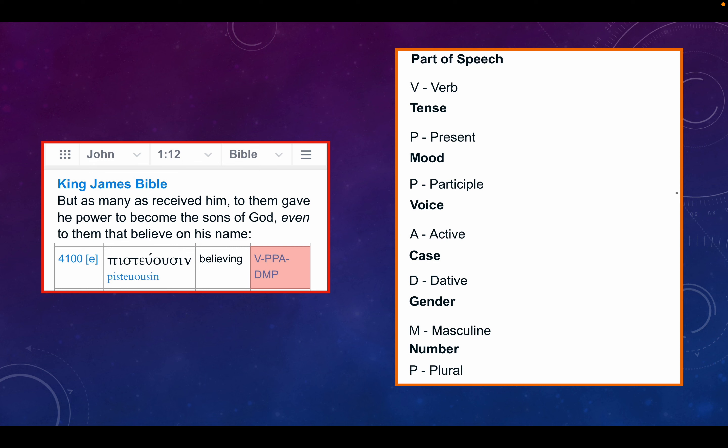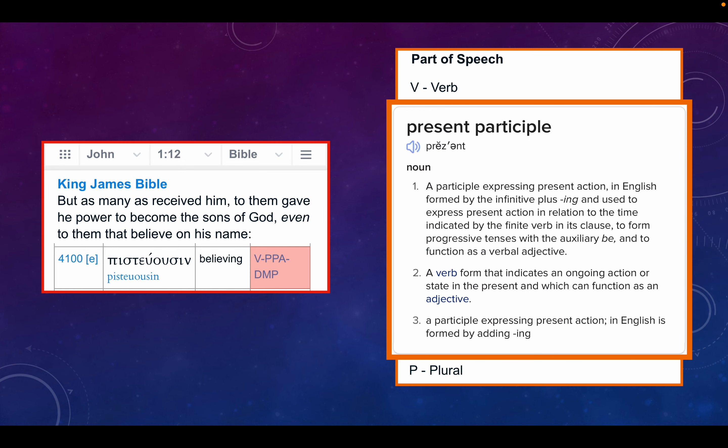Noun, a participle expressing present action, in English formed by the infinitive plus ing, and used to express present action in relation to the time indicated by the finite verb in its clause, to form progressive tenses with the auxiliary be, and to function as a verbal adjective. A participle expressing present action in English is formed by adding ing, so like singing, talking, walking, doing.